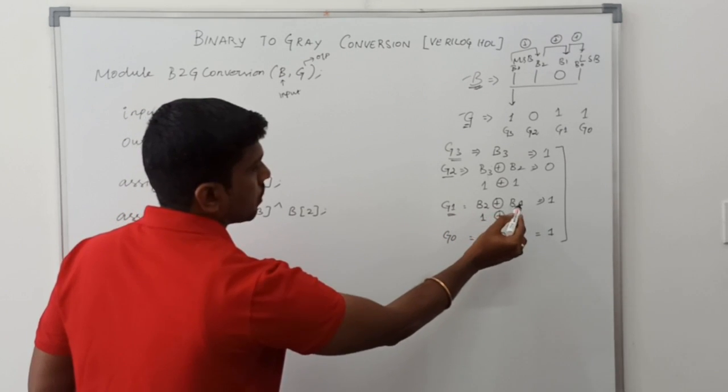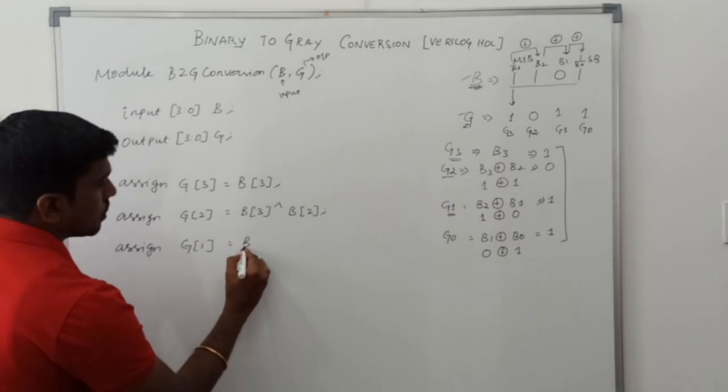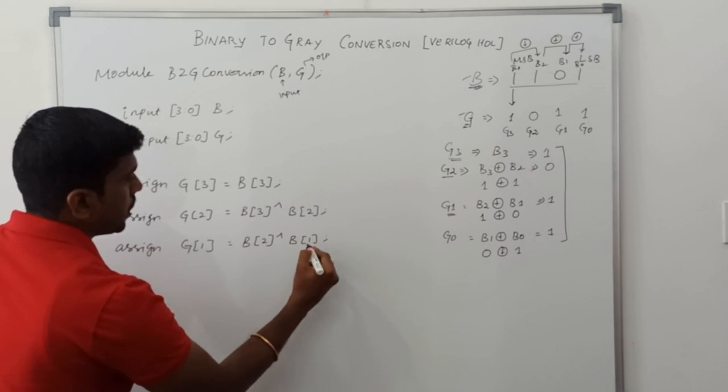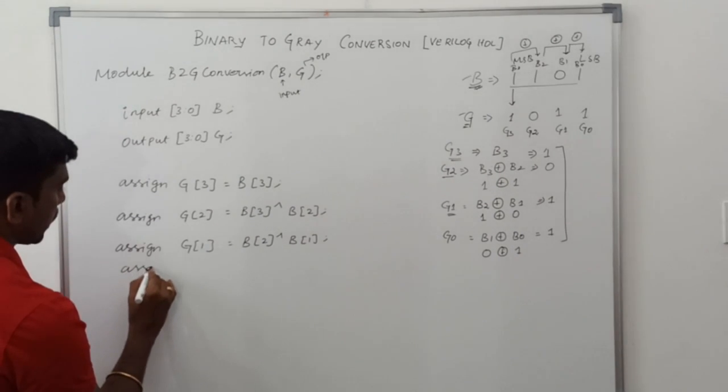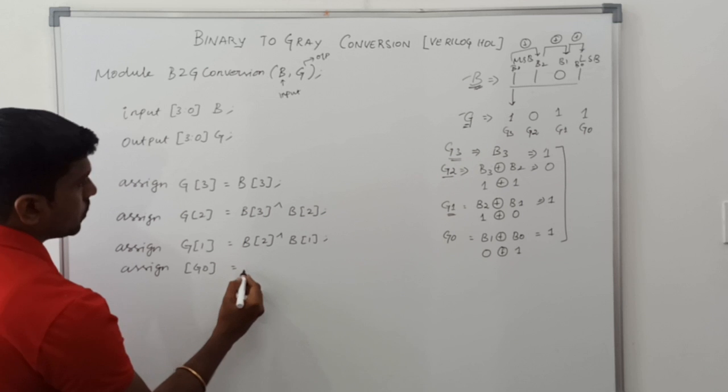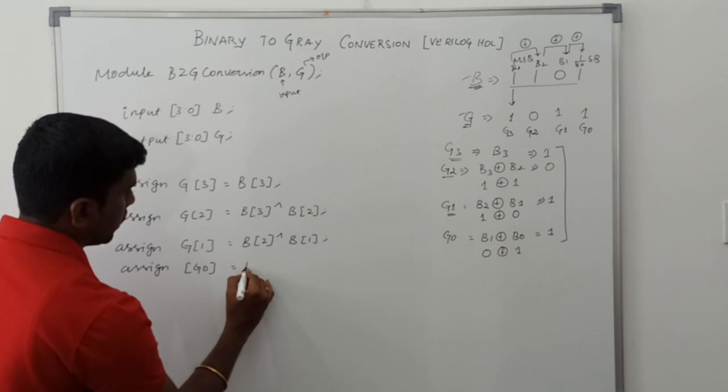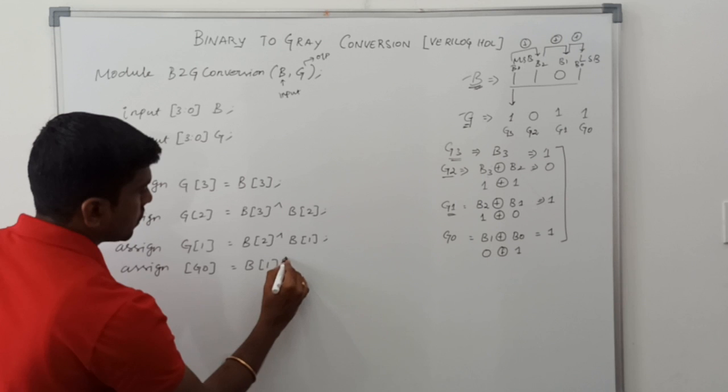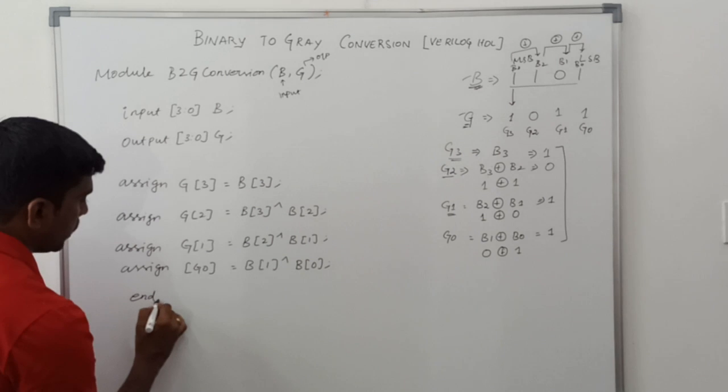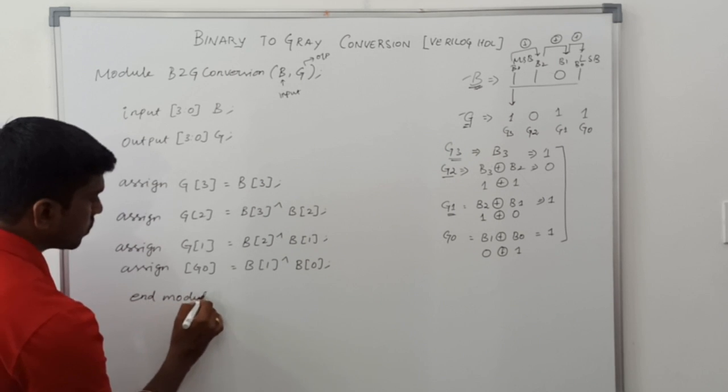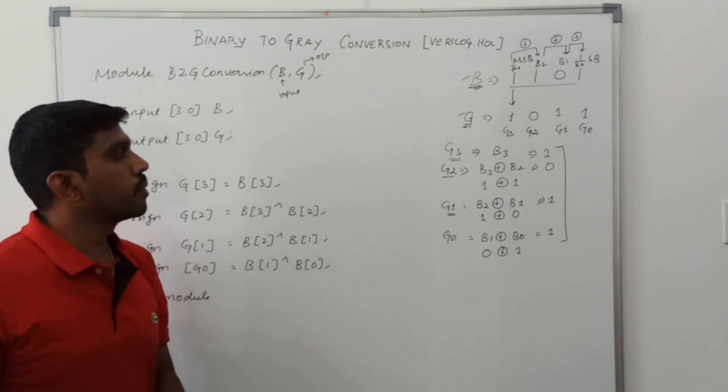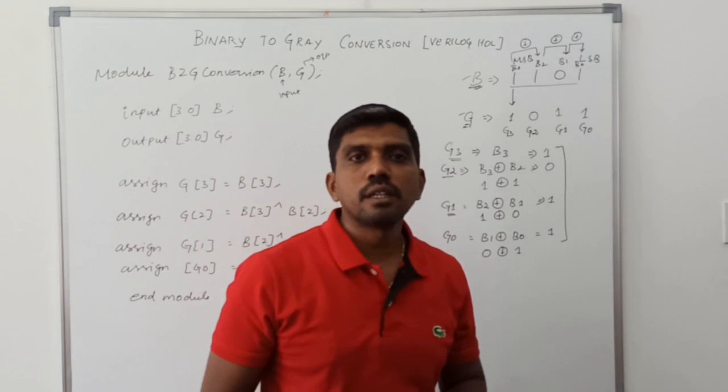Then assign G1 equal to B2 XOR B1. Then assign G0 value, so B1 XOR B0. Finally, endmodule.